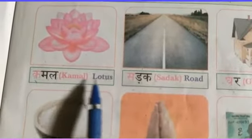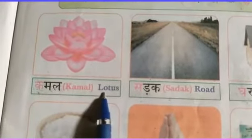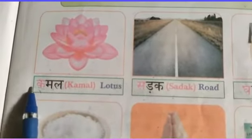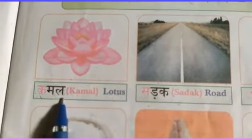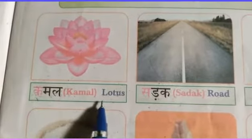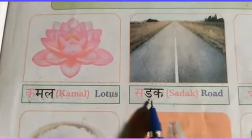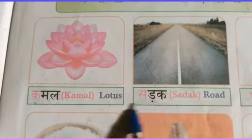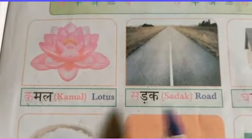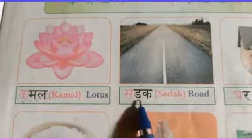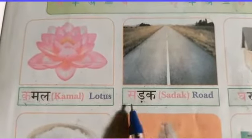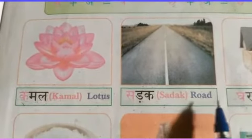Ka-ma-la — kamal — lotus. Sa-ta-ka — sadak — road. Sa-da-ka — sadak — road.